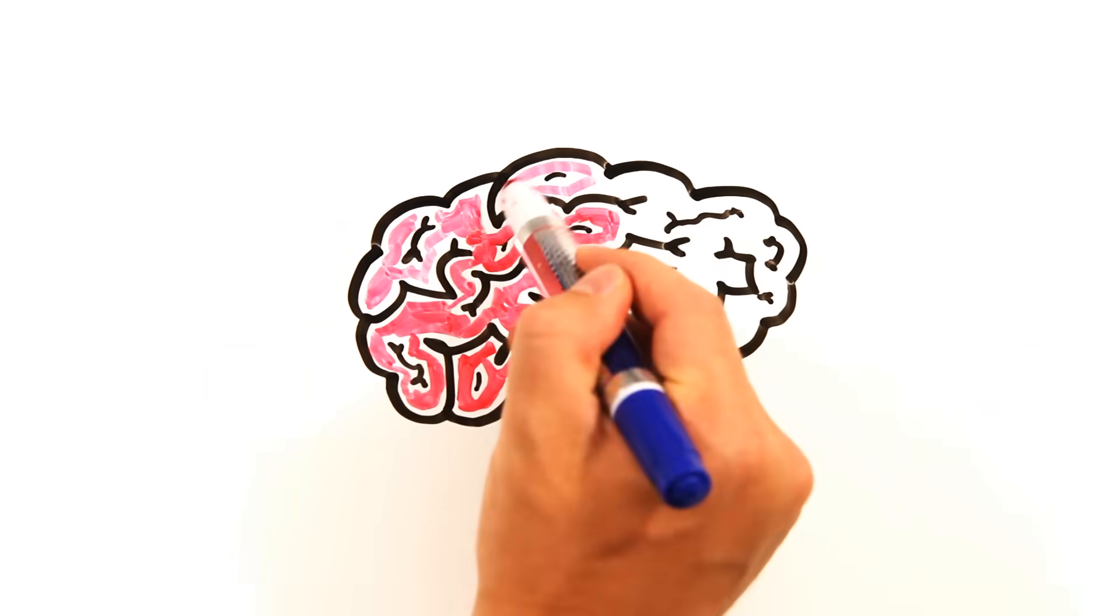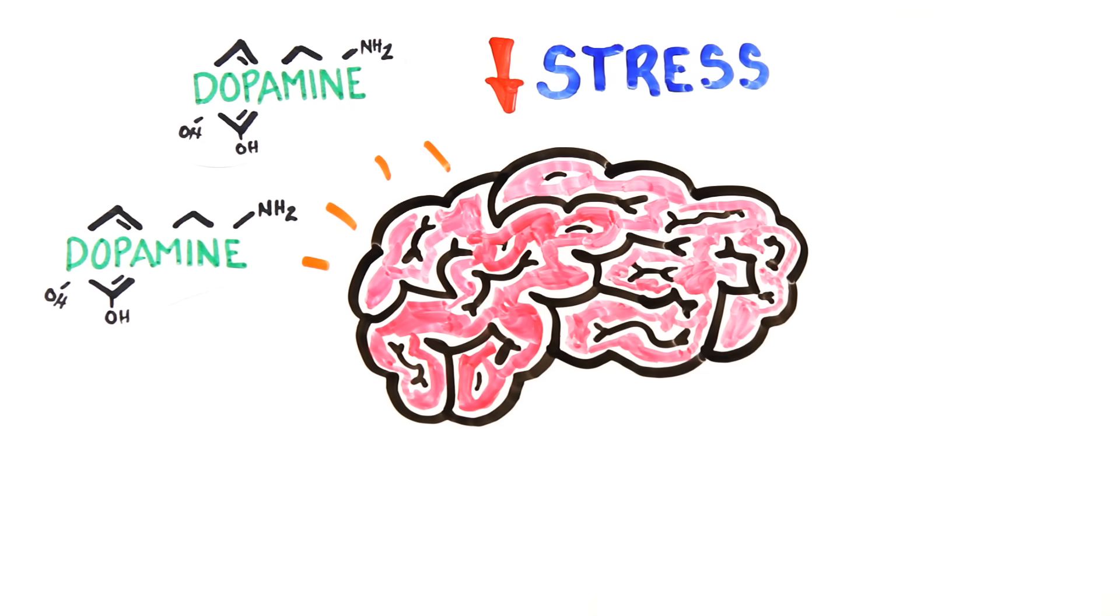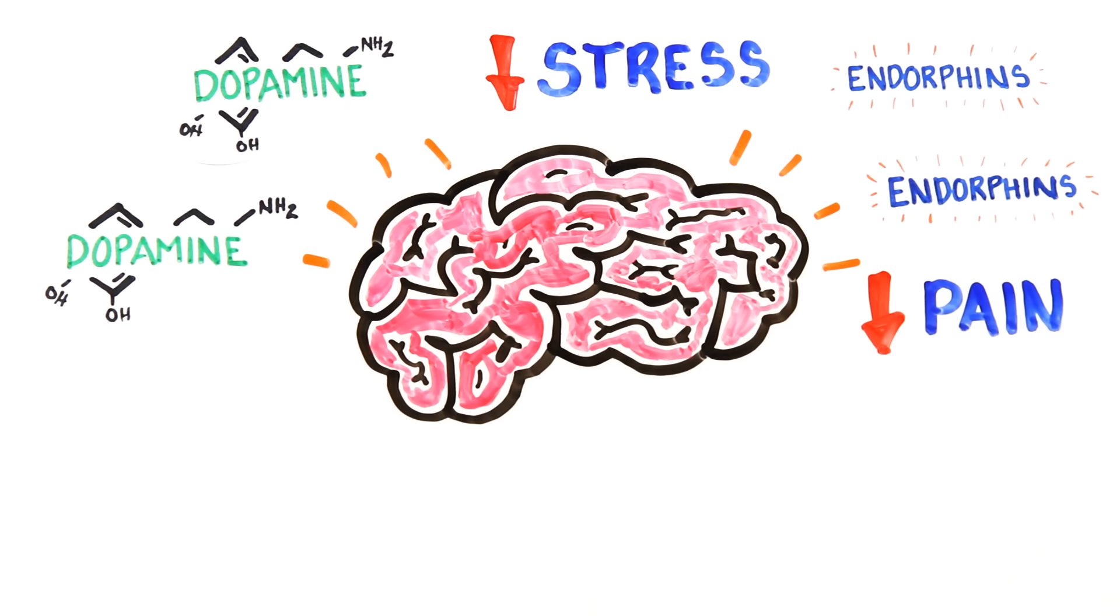Not only is dopamine released, which helps control the brain's reward and pleasure centers, reducing feelings of stress, but other endorphins released during an orgasm can decrease your perception of pain.